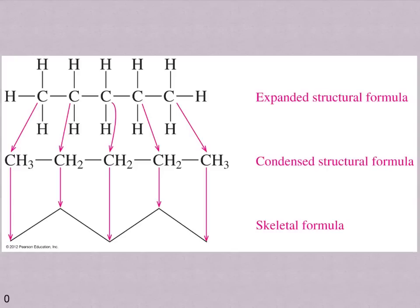In this picture we see three different structures all representing the exact same molecule. If we look at these we notice that we have five carbons in the first structure, five carbons in the second, and there are actually five in the last — the skeletal formula — although we don't actually explicitly see those carbon atoms. What we want to be able to do is translate between these different structures so that if you're given one you can draw the other two.